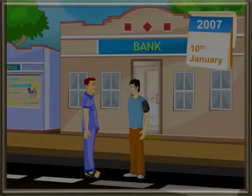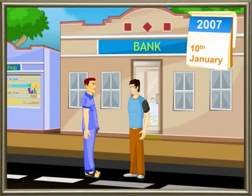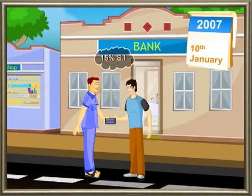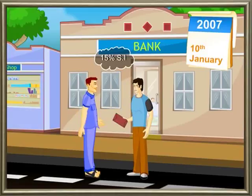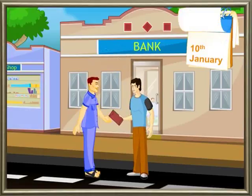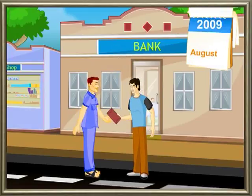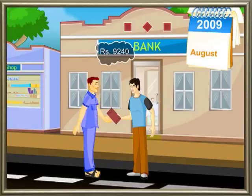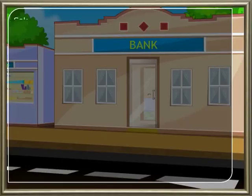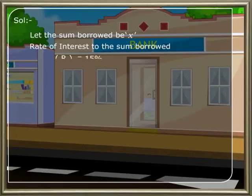Example 2: A man borrowed some money at fifteen percent simple interest and cleared the debt at the end of two years and eight months by paying rupees 9240. Find the sum borrowed. Let the sum borrowed be x, the rate of interest is fifteen percent, that is R.